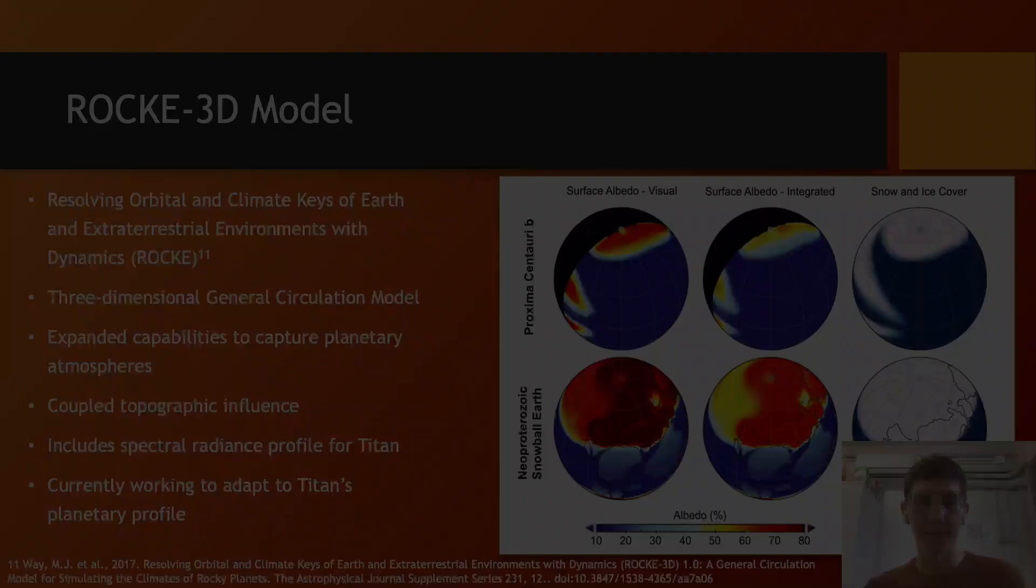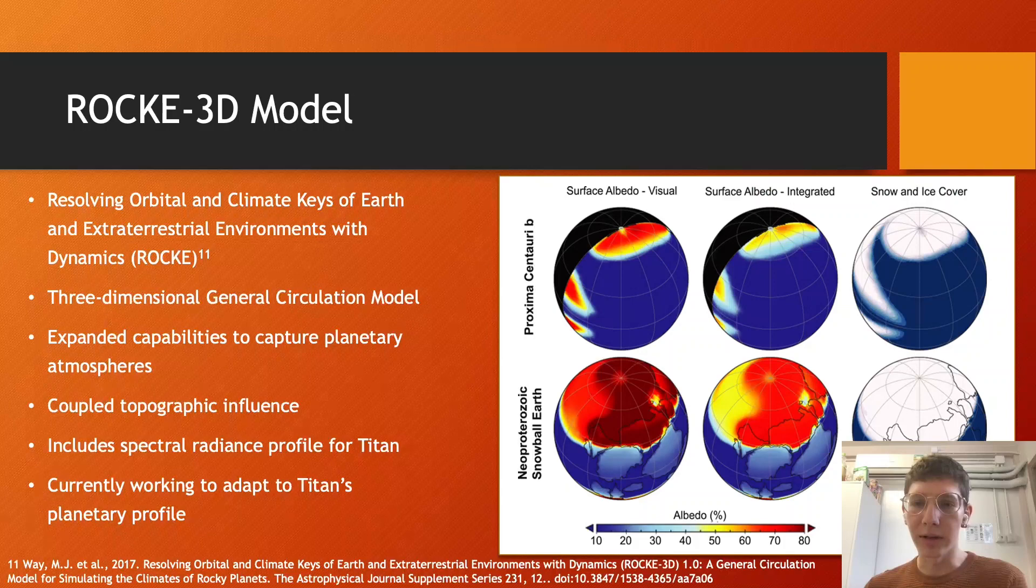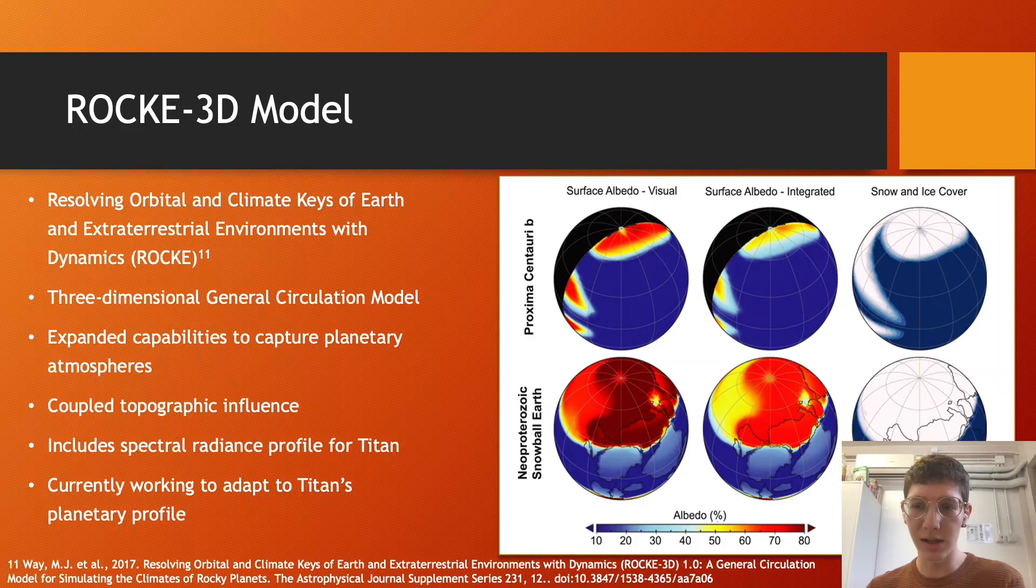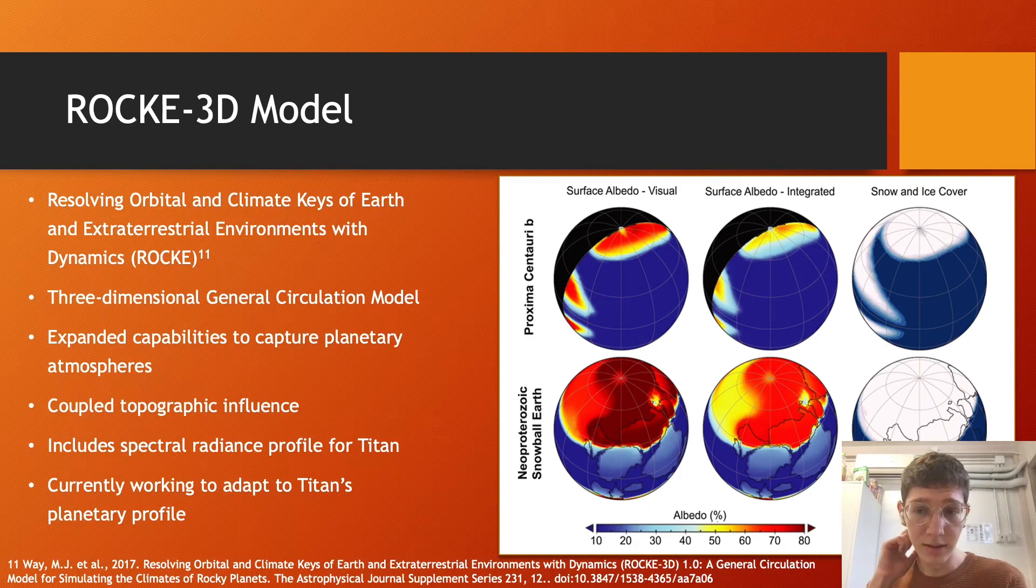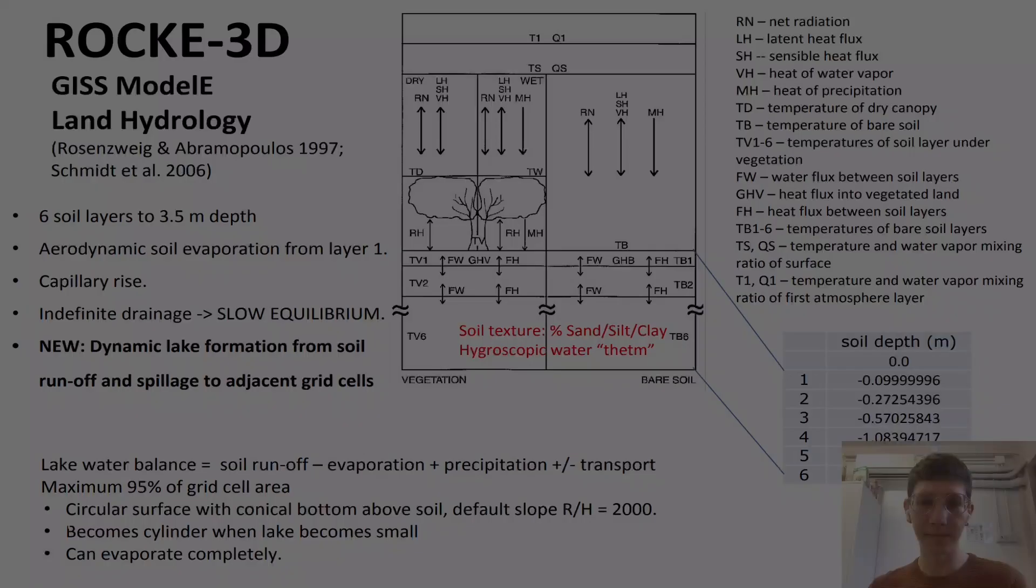The model I'm currently using is the Resolving Orbital and Climate Keys of Earth and Extraterrestrial Environments with Dynamics, a three-dimensional GCM developed at the GISS for modeling extraterrestrial planets. And it's an ongoing effort to handle a broad range of atmospheric conditions as well as diverse oceans, land distributions, and topographies.